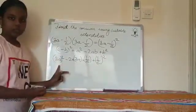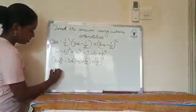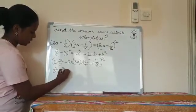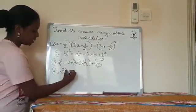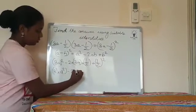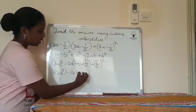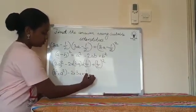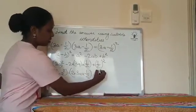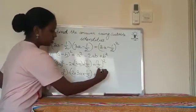So we substitute: (3a)² - 2 into 3a into 1/2 plus (1/2)². Now 3² equals 9.